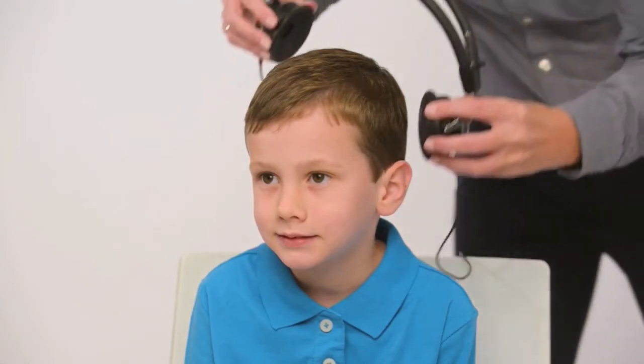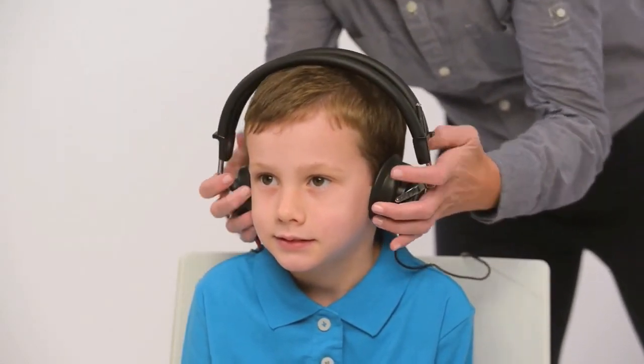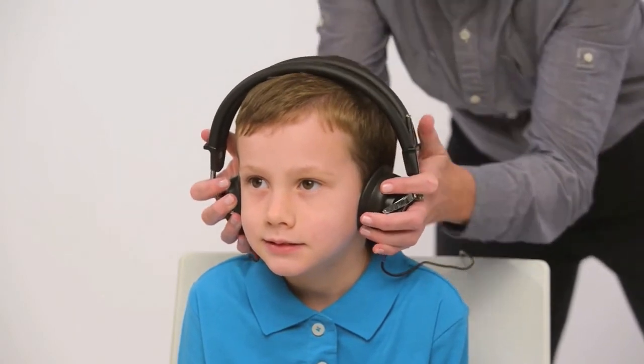Place headphones directly over child's ear with red phone on the right ear, blue on the left. Remove any obstructions that may interfere or be uncomfortable such as glasses. Adjust the headband so the headphones are centered over the ear canal.